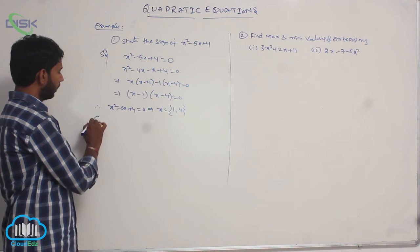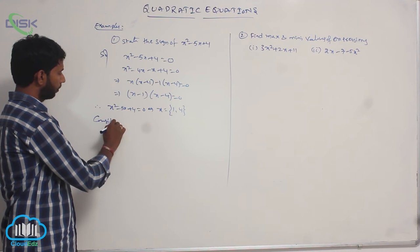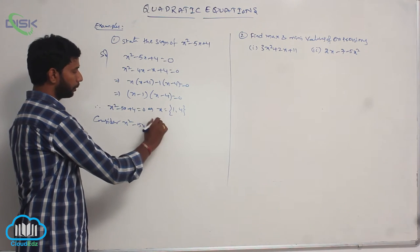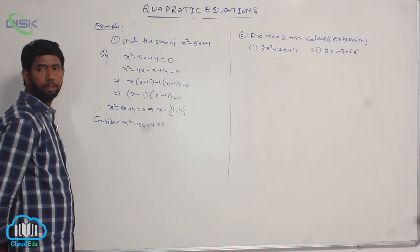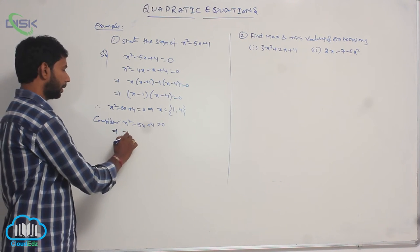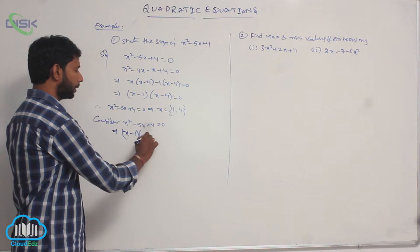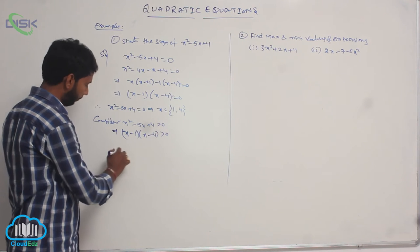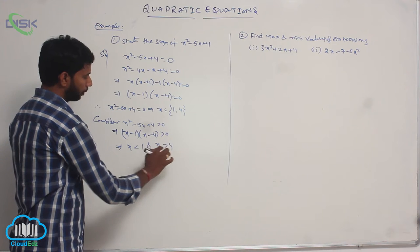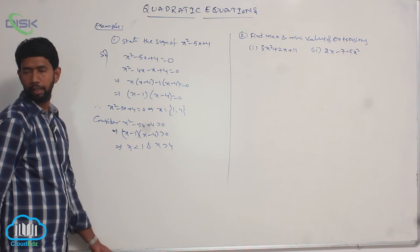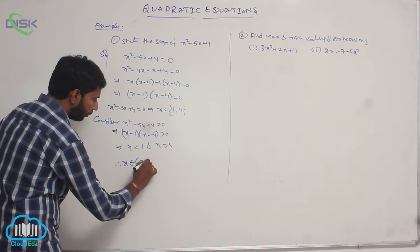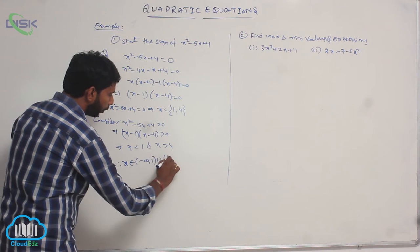Next, consider when the expression is positive, that is x² - 5x + 4 > 0. The factors give (x - 1)(x - 4) > 0, that is x < 1 and x > 4.